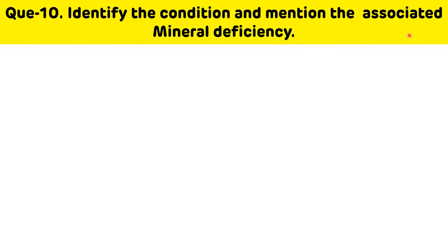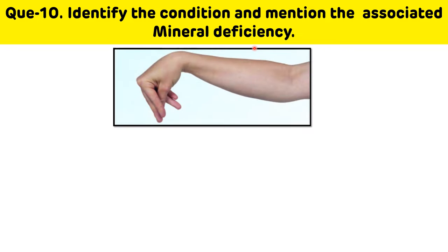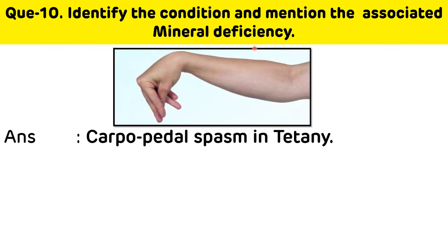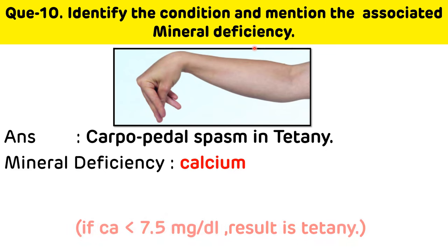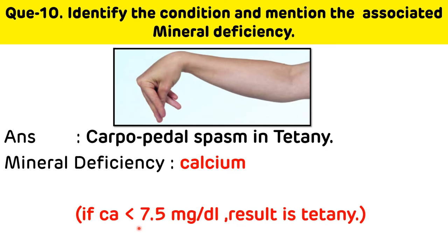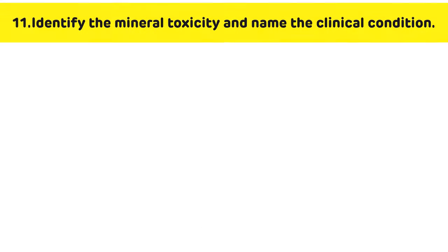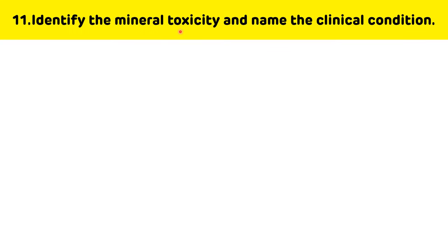Tenth question: identify the condition and mention the associated mineral deficiency. This is the picture of carpopedal spasm, which is seen in tetany and is associated with calcium deficiency. It occurs when the calcium level is less than 7.5 mg/dL. The normal level of calcium is 9 to 11 mg/dL.